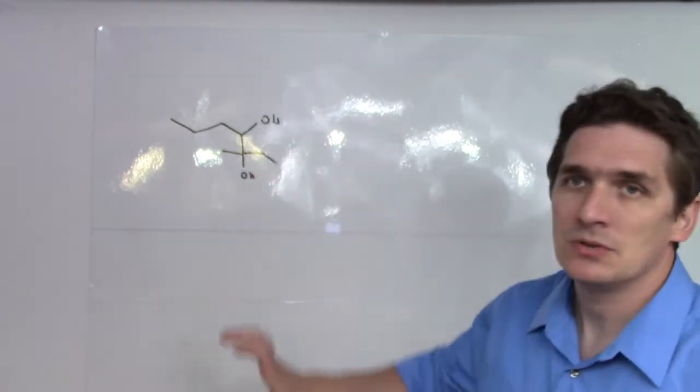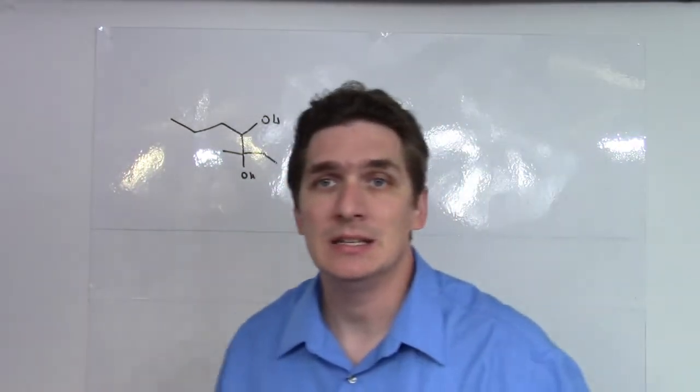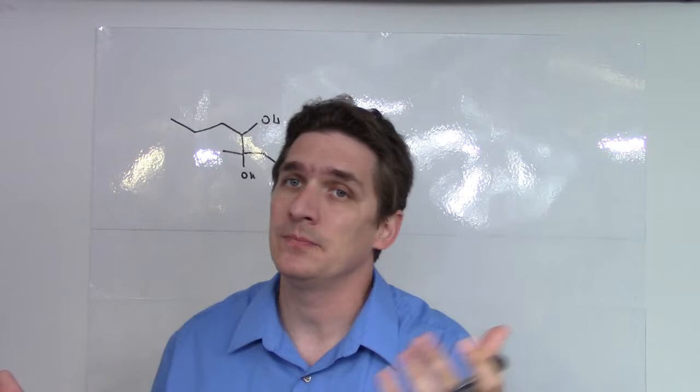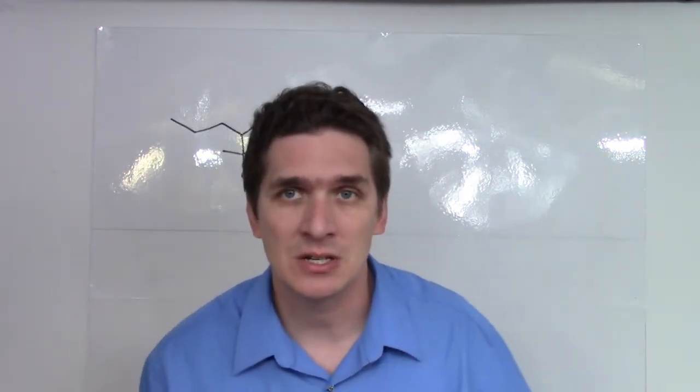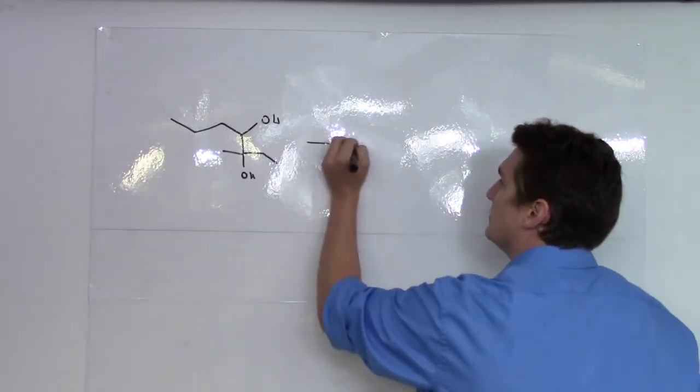we have two alcohols which are vicinal to one another. We create this diol by taking perhaps the alkene and adding potassium permanganate or, for a fancy rich school, osmium tetroxide. And we add periodic acid, HIO4.